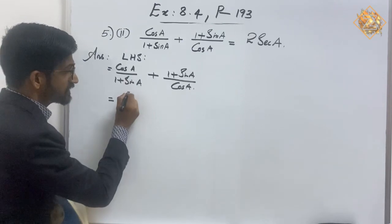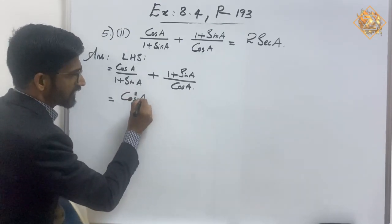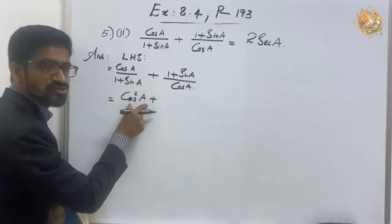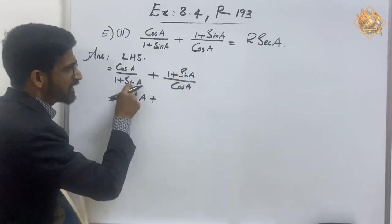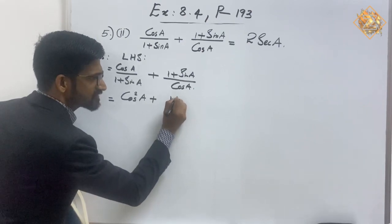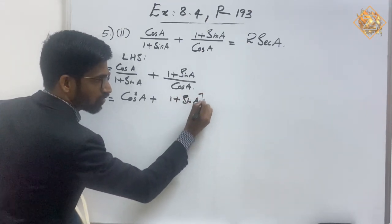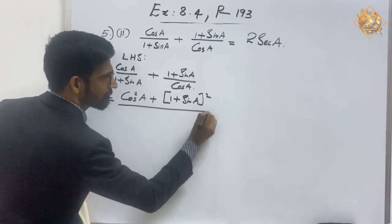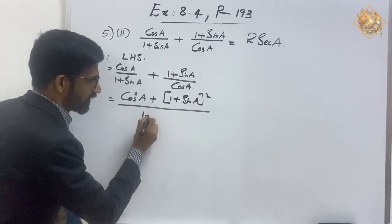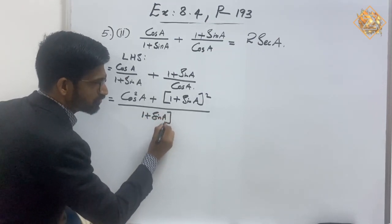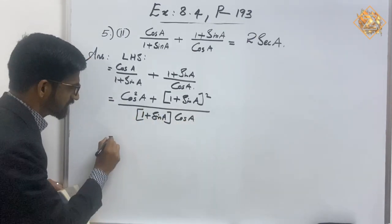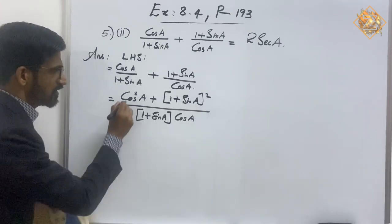We will do the cross multiplication. cos(a) × cos(a) gives cos²(a), plus doing cross multiplication: 1 + sin(a) × (1 + sin(a)), which is (1 + sin(a)) whole square, all over (1 + sin(a)) × cos(a). That gives us cos²(a) plus (1 + sin(a))².